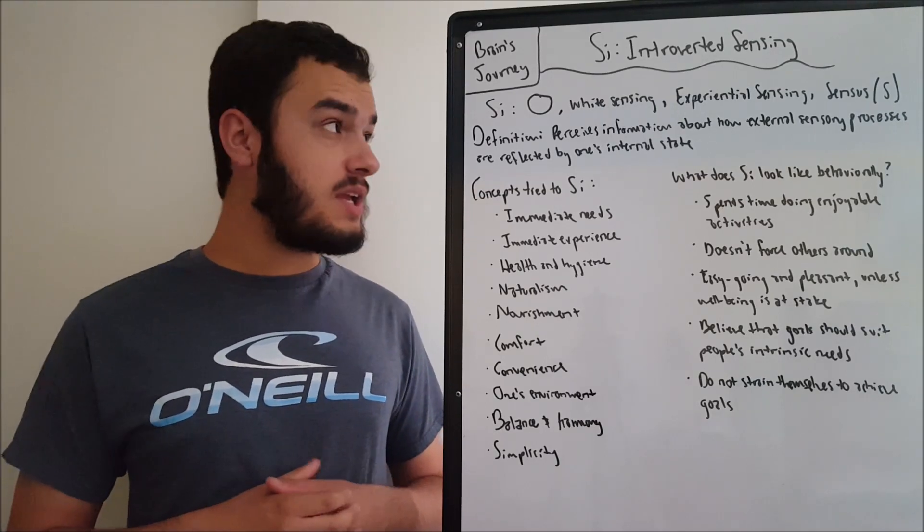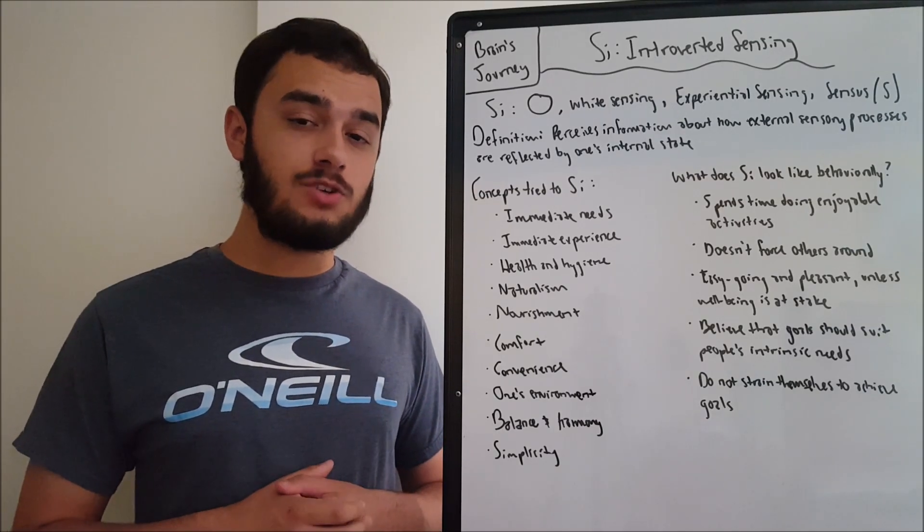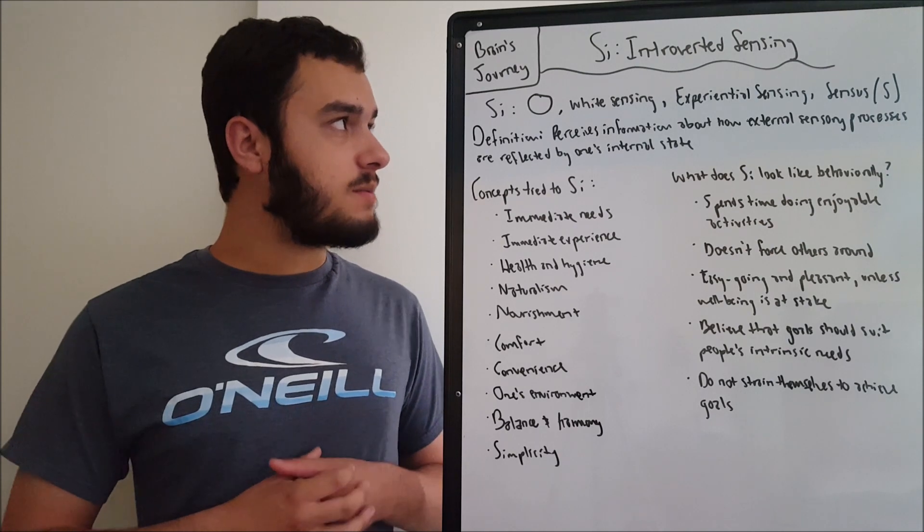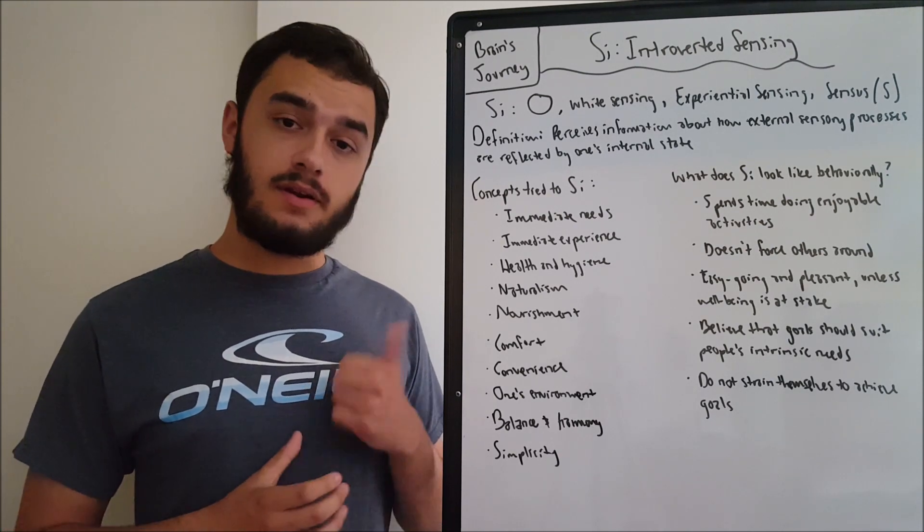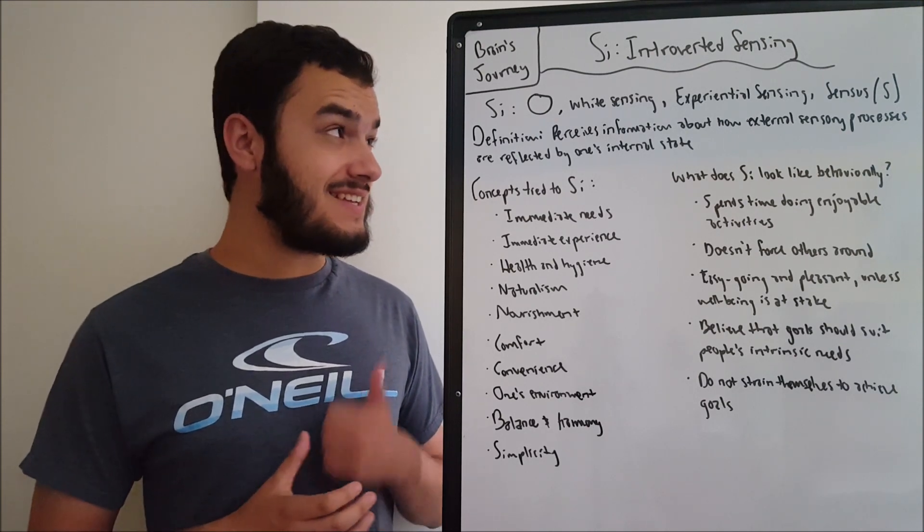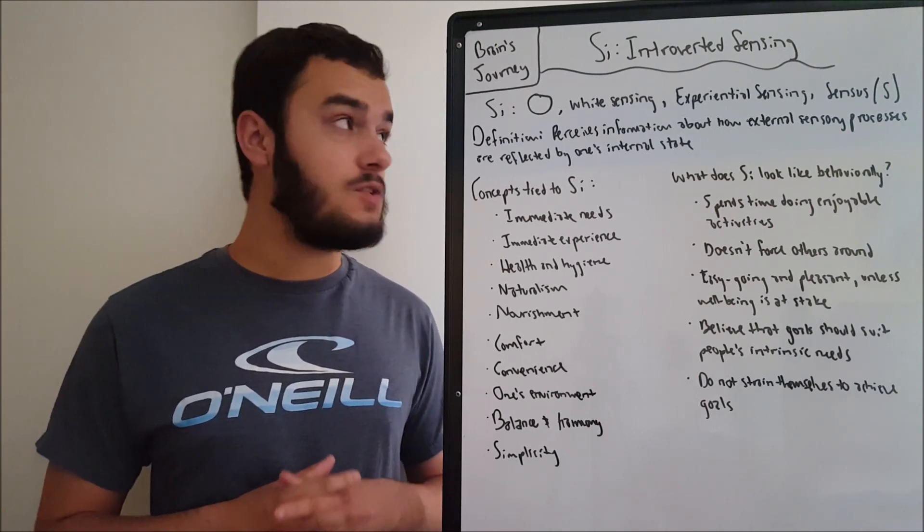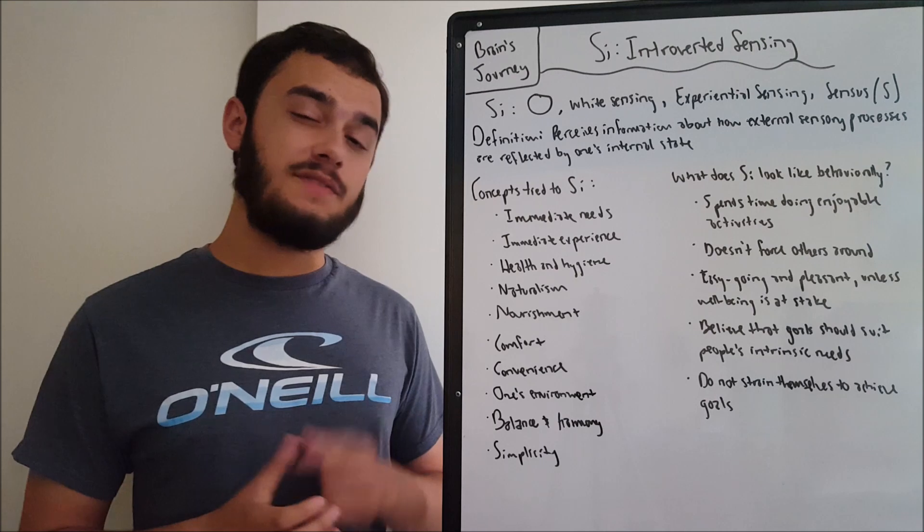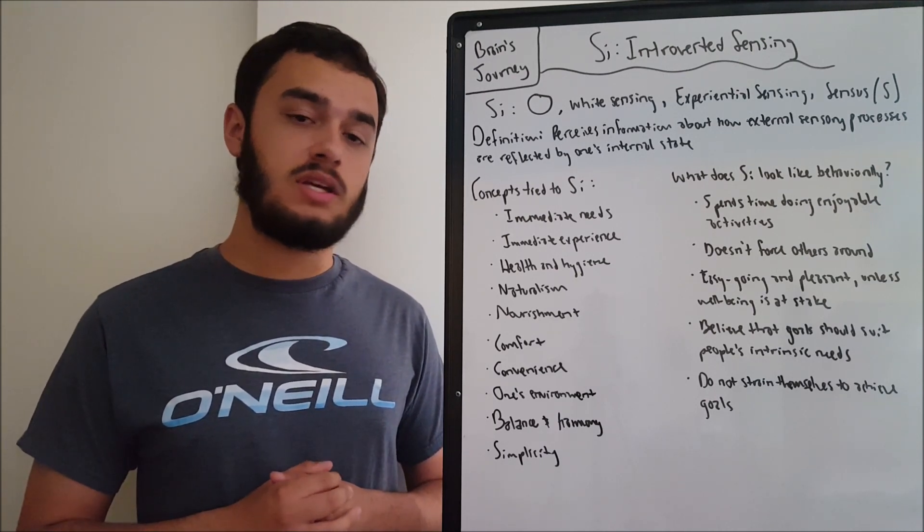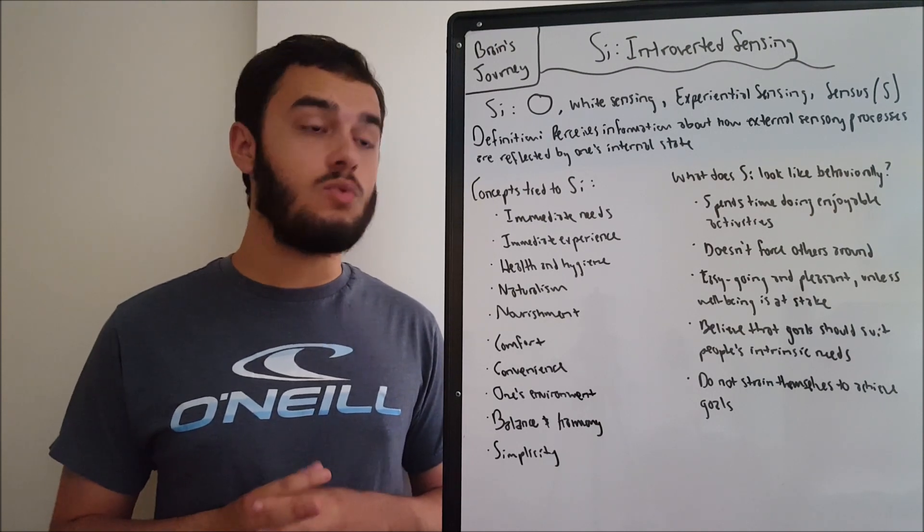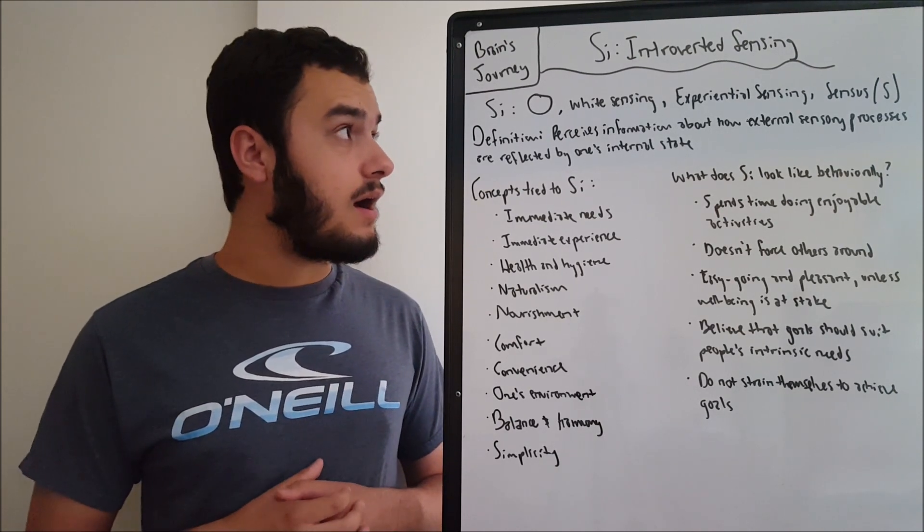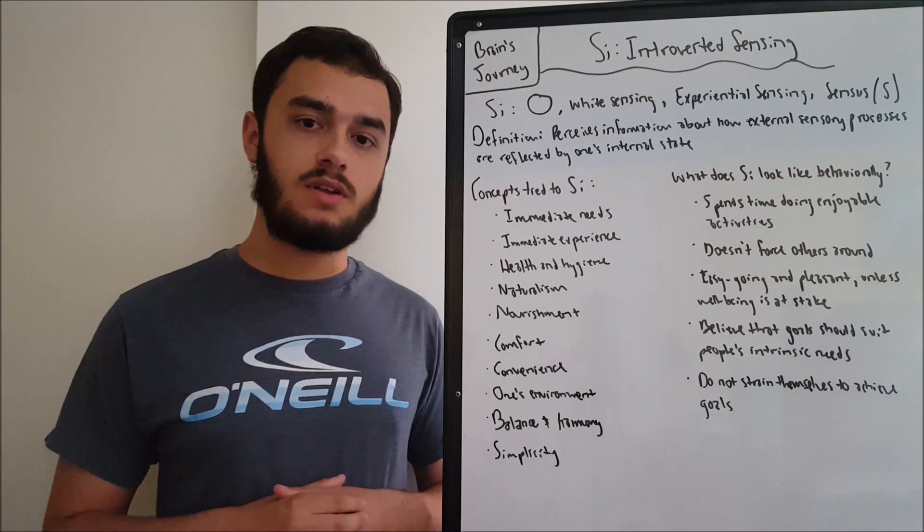Hello everyone, this is Brain's Journey, and welcome back to another information element video. Today we're going to talk about SI, or introverted sensing. I figured I'd follow up with this function, the next sensing function after SE. If you'll recall the video on SE, if you haven't, then I advise going and watching it. But I thought I'd make this one to compare and contrast them so that you all can identify them better.